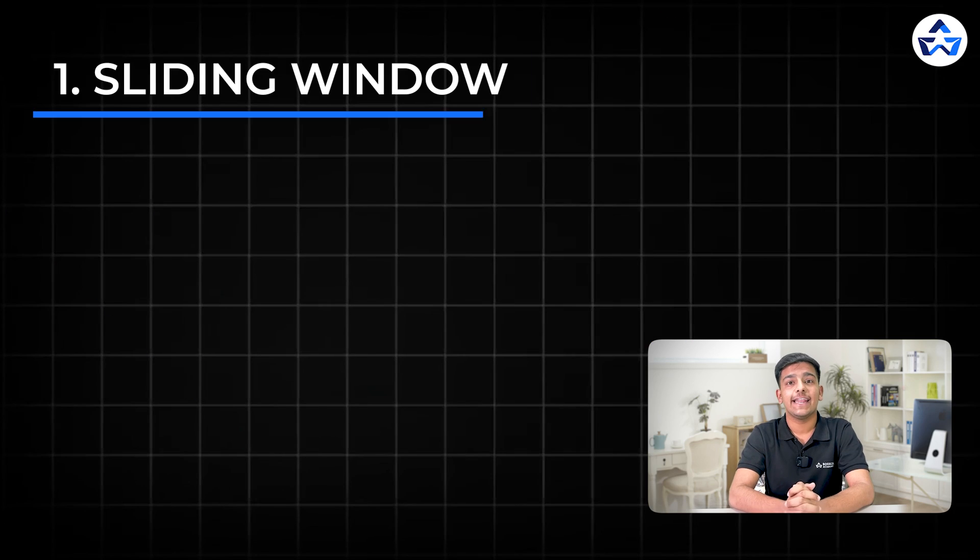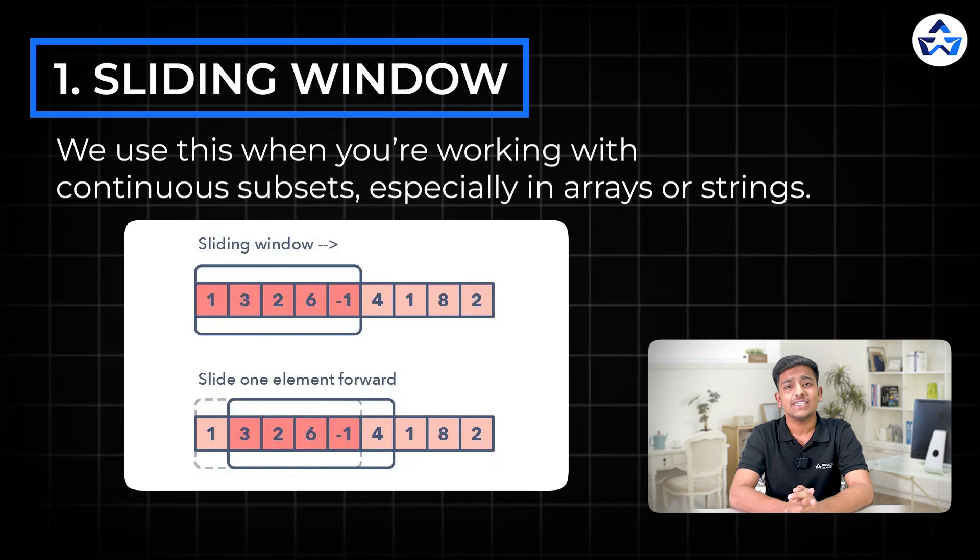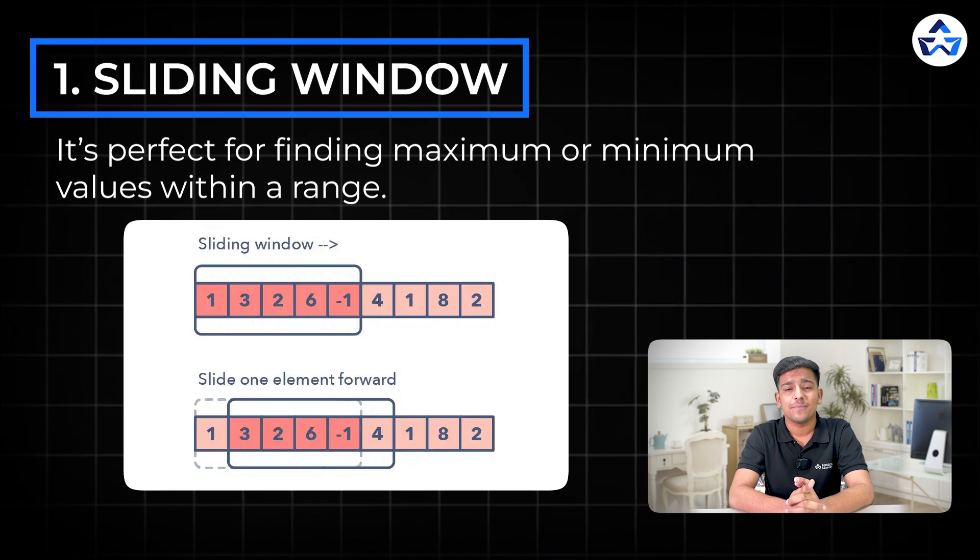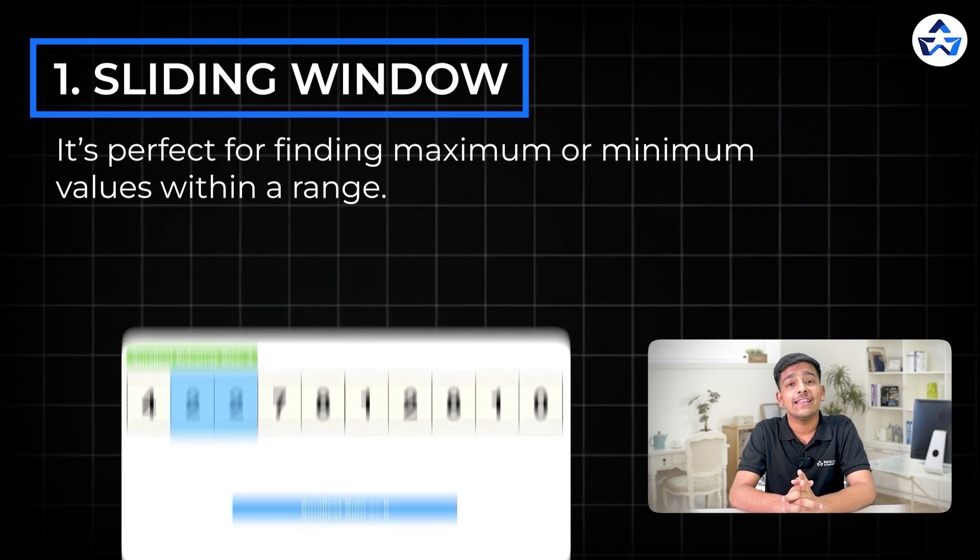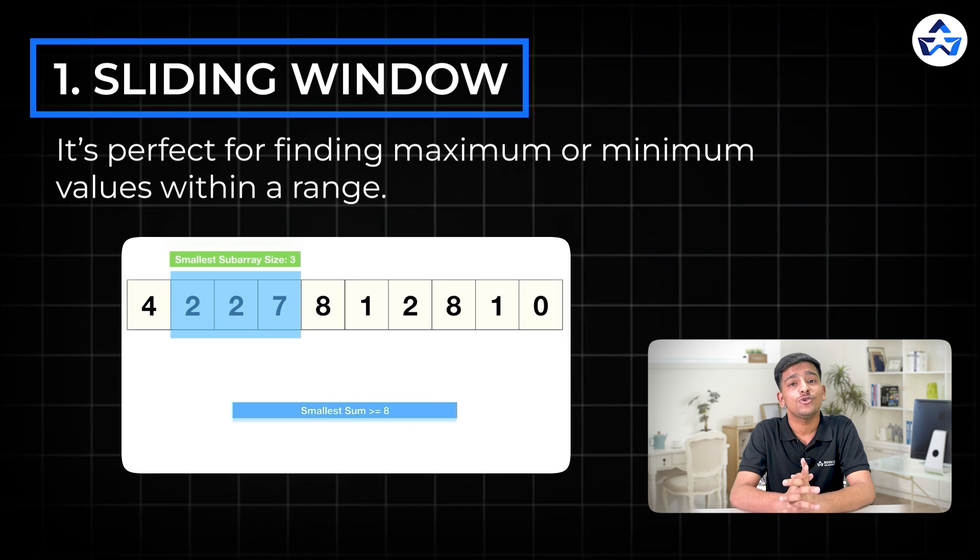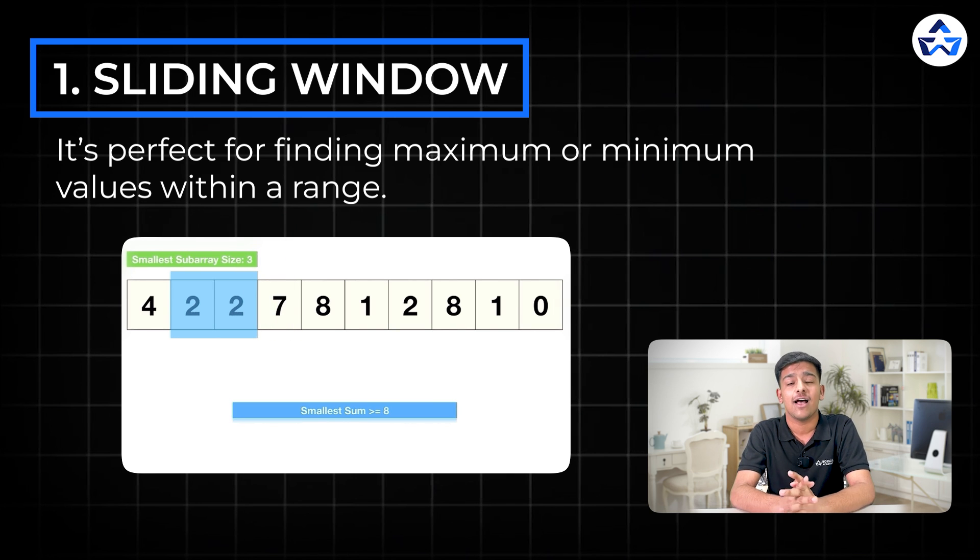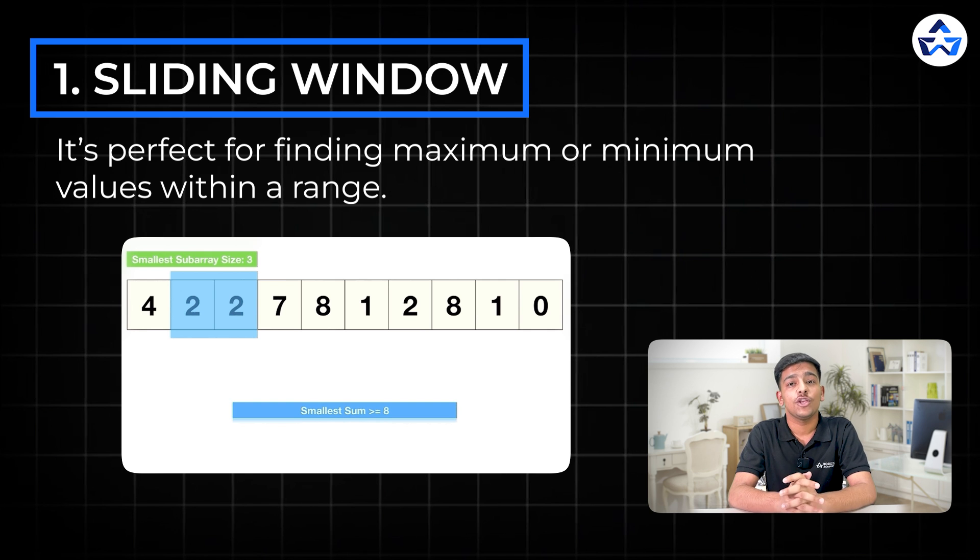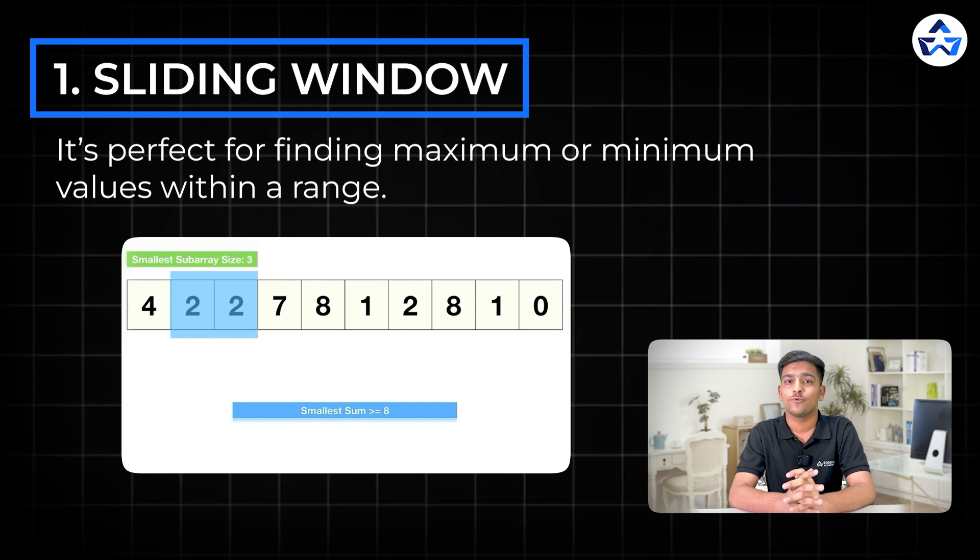The very first one is sliding window. We use this when we are working with continuous subsets, especially in strings and arrays. It's perfect for finding maximum and minimum values within a range. Just remember with the sliding window, you are either increasing the size of the window to include more important data or shrinking it to discard unnecessary data. This way you can focus on that part of data which you care about. The reason behind using this pattern is because the time complexity of this is way much better than brute force.